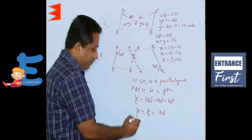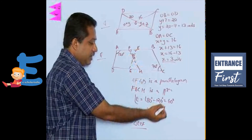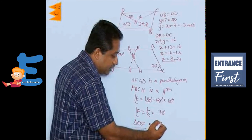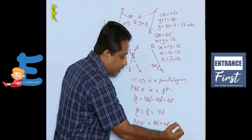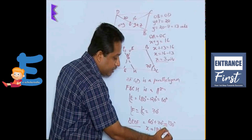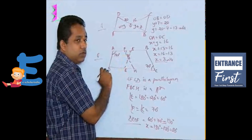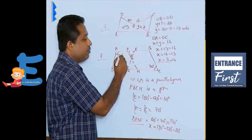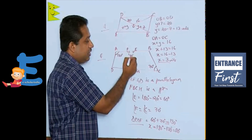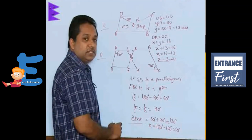Looking at triangle EOF, we have already found two angles: 60° and 70°, which sum to 130 degrees. Using the property that the sum of angles in a triangle is 180°, the unknown angle X equals 180 minus 130, giving X equals 50 degrees. The answer was found using three properties: co-interior angles sum to 180, opposite angles of a parallelogram are equal, and the angle sum of a triangle is 180.